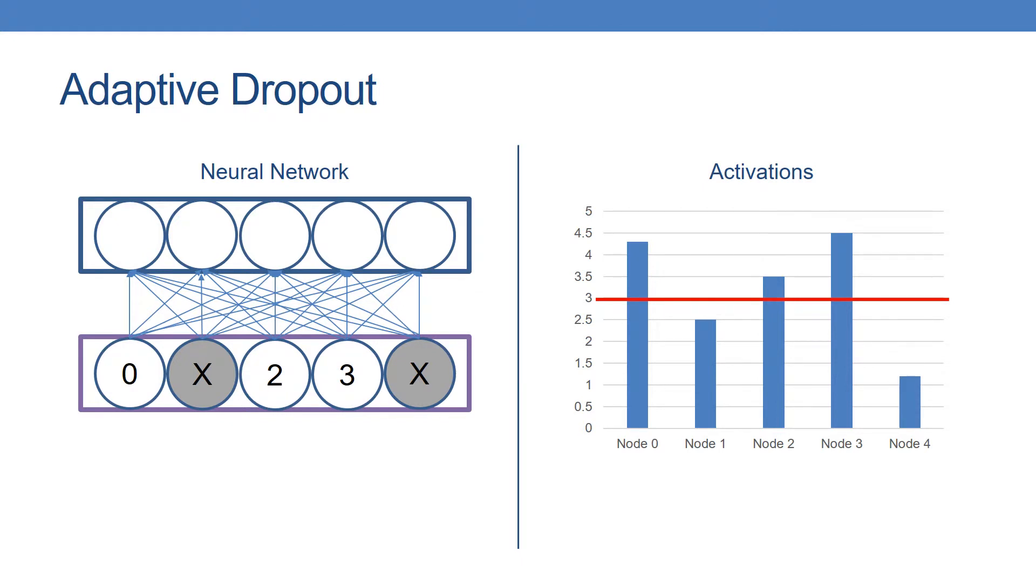The strength of adaptive dropout is that it selects a very sparse set of expert neurons. The drawback is that it requires computing all the neuron activations first.